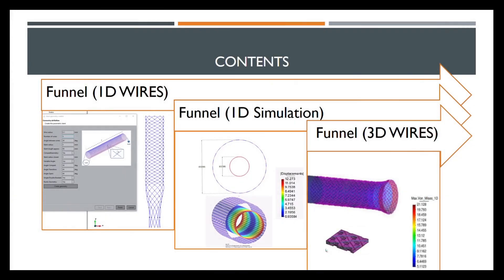For improving the design of the device, in particular the funnel, we need to create the geometries as fast as possible. GID allows us to do it automatically. Today, we are presenting two types of geometries: using beam elements and with three-dimensional wires. The preliminary results of one-dimensional computational models are also shared.